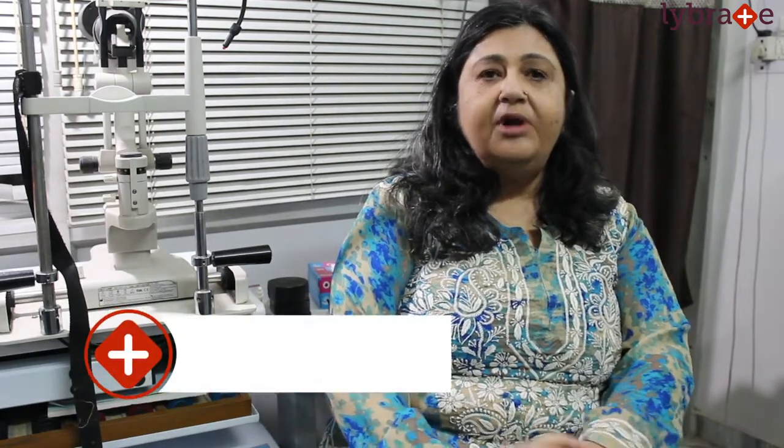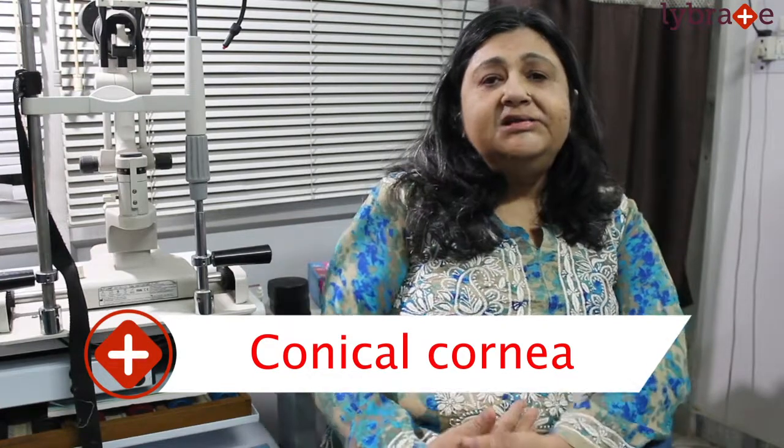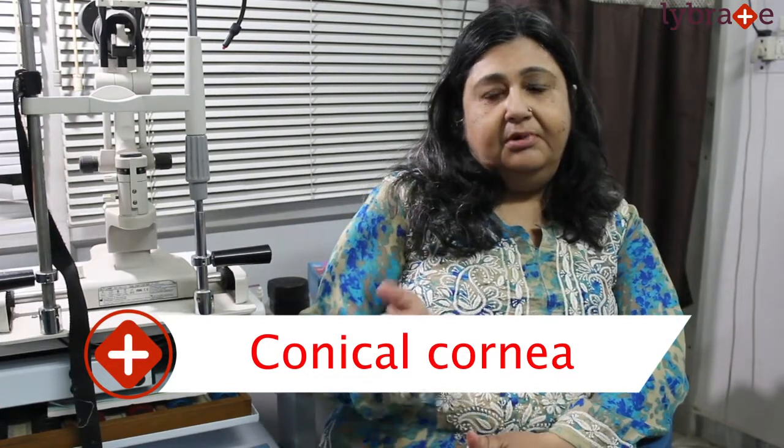It is keratoconus, commonly known as conical cornea. The cornea is basically a transparent structure which is in front of the iris and the lens, and is an optical surface from which the light rays pass and form an image on the retina.